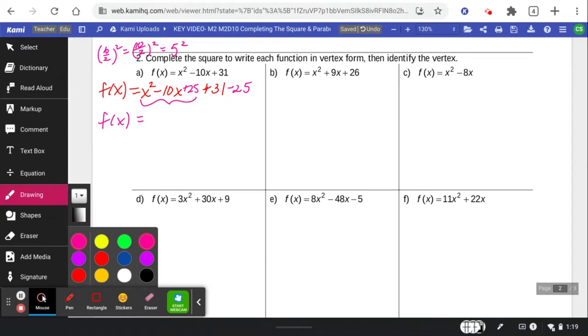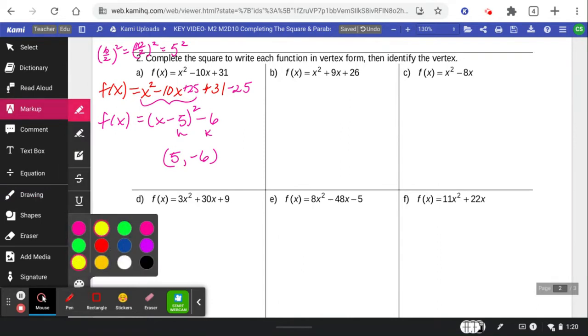The reason we did this is to make the x minus 5 squared factors. And then 31 minus 25 would just be negative 6. Finally, my vertex, my h and my k are 5 and negative 6. Remember that the sign of the h is the opposite of the minus in the equation there. And the sign of the k stays the same.